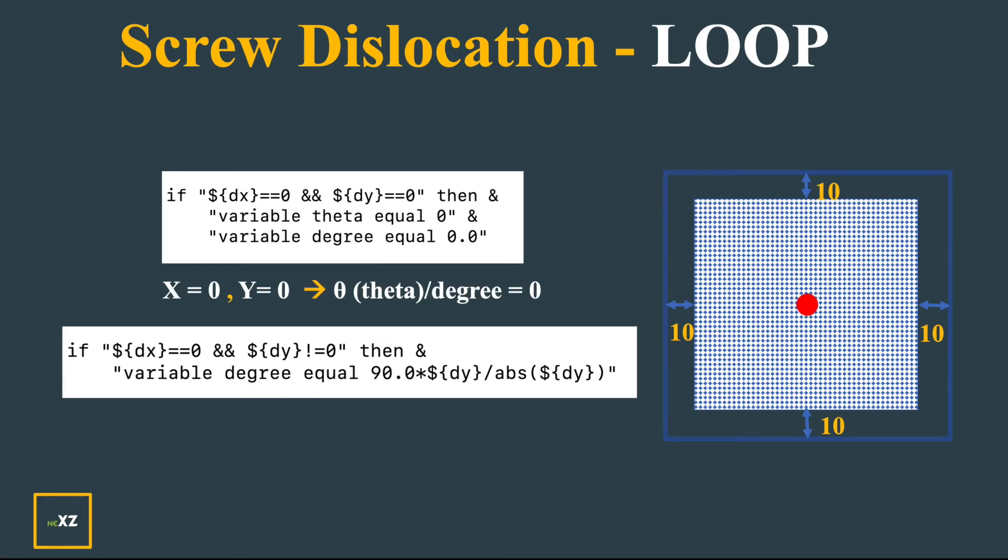If x equals 0 and y equals 0, tan inverse y by x is not defined, so you give 0. And if x equals 0, it means the denominator is 0, but y is not equal to 0 - it means it's an infinite value. Tan inverse of infinity is 90 degrees, so that's why I give 90 times dy divided by absolute of dy. dy can be positive or negative, so absolute dy means I get plus 90 or minus 90.